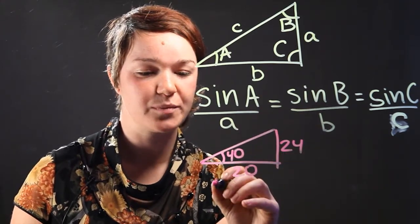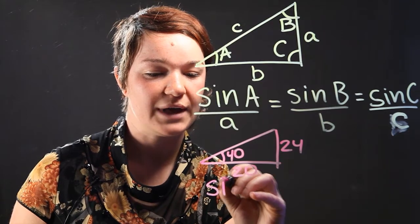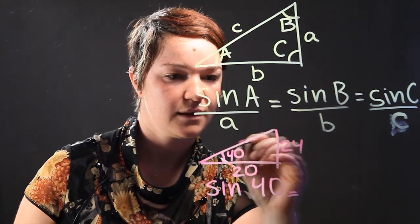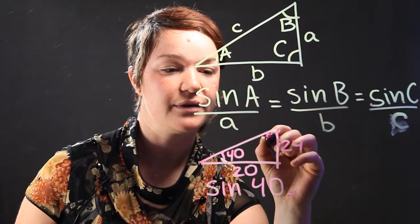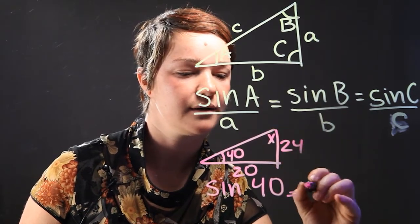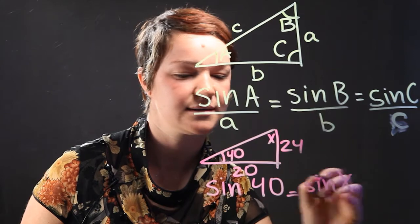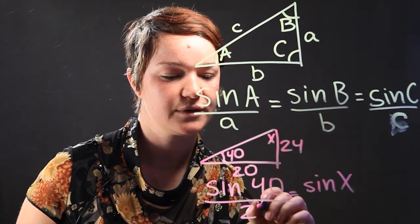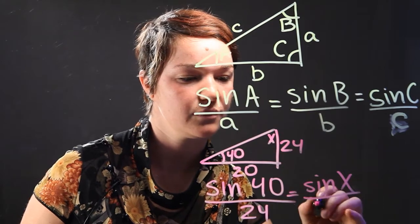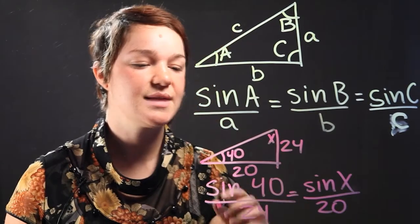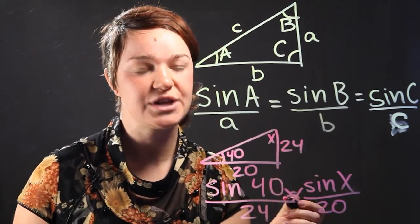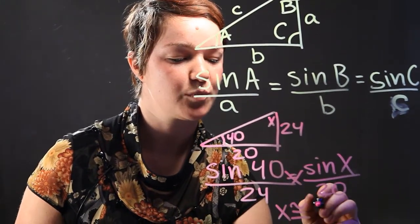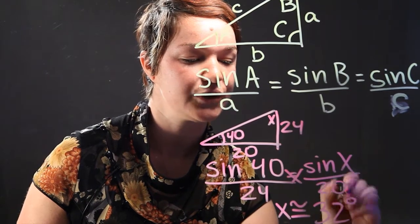All you have to do is set up your proportions. We'll have sine of 40 equal to, we're going to figure out this angle right here, sine of x. You have to divide this by the opposite side, over 24, over 20. And then, after doing cross multiplication and simplification, you find out that x is equal to approximately 32 degrees.